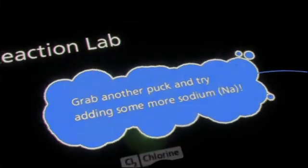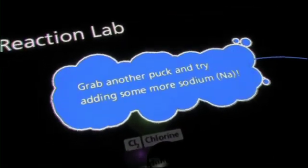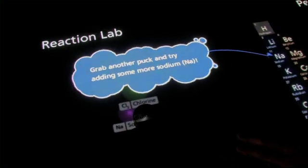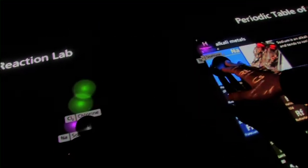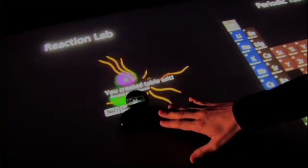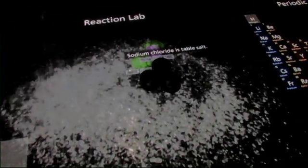They try to bring them together to cause chemical reactions to happen. So for example, we could bring sodium and chlorine together, and when we do that we create table salt. So each of the objects, each of the atoms or molecules that you interact with, is represented by a physical object that you can hold in your hands.